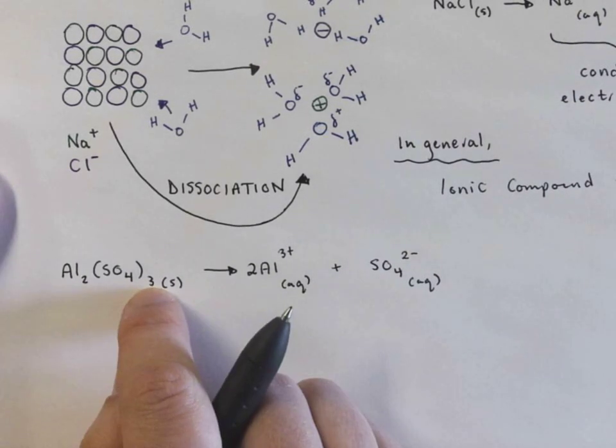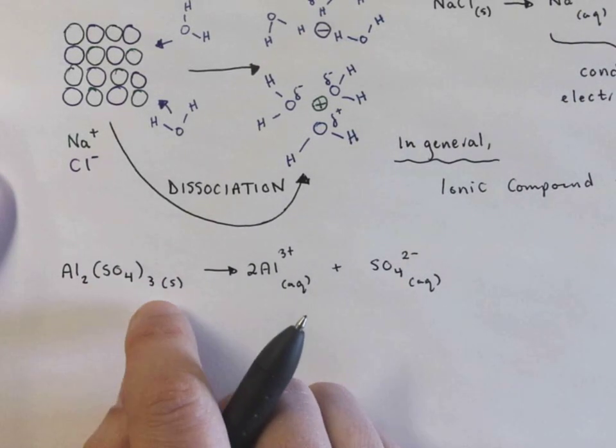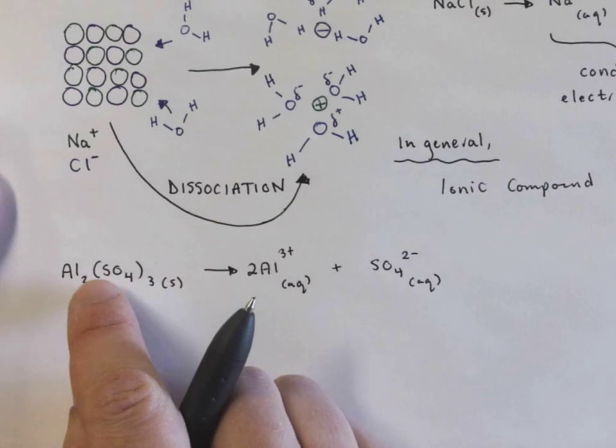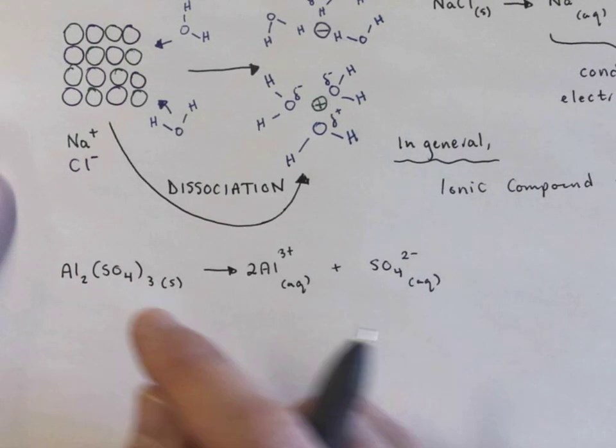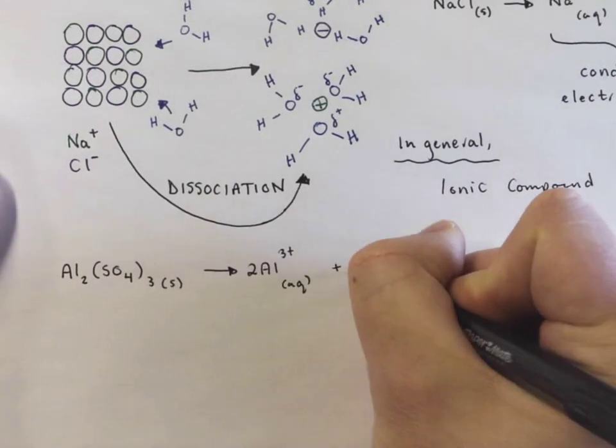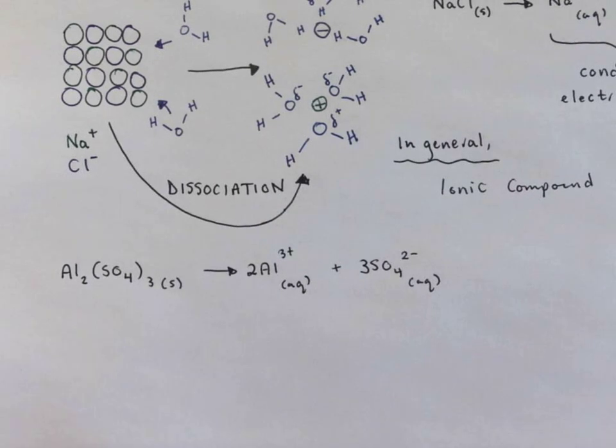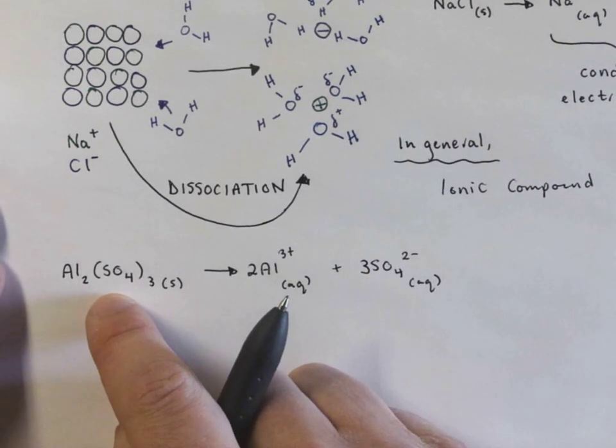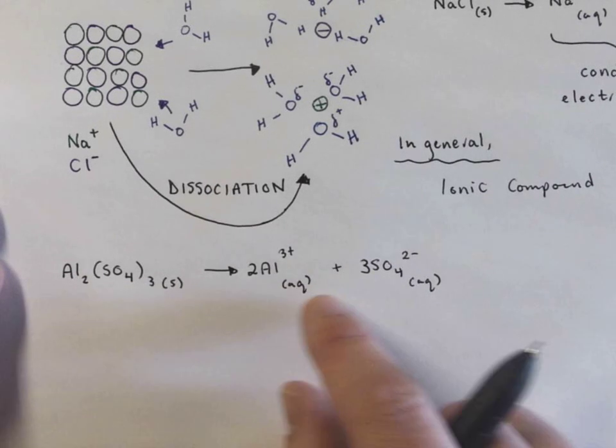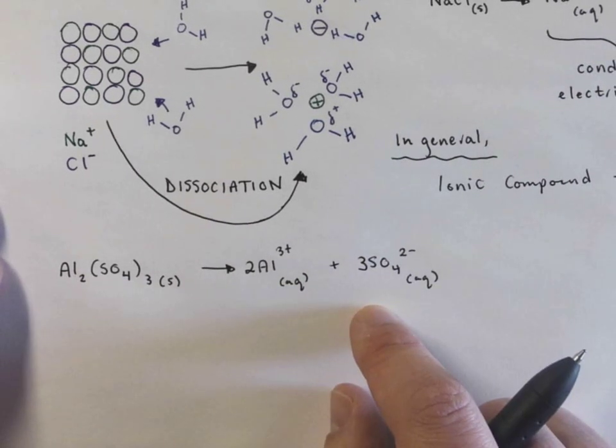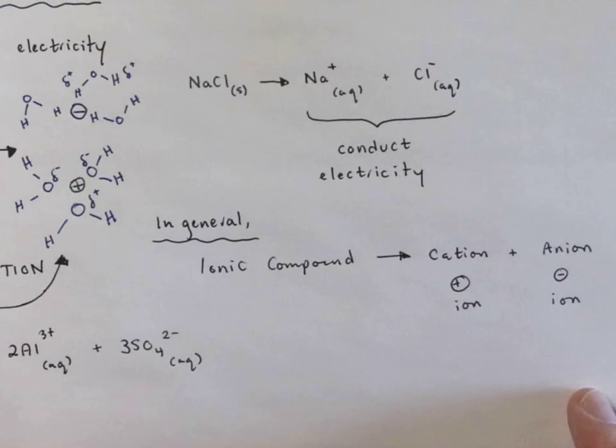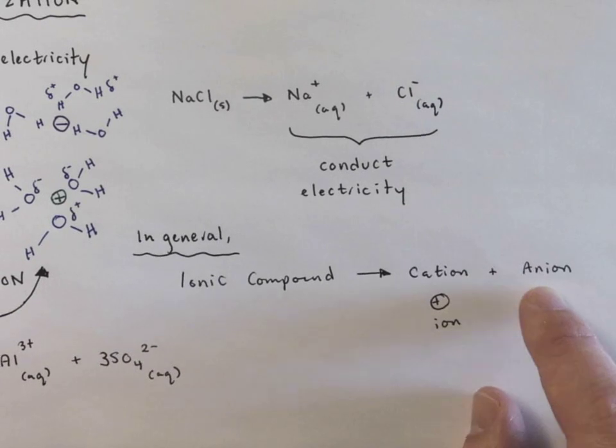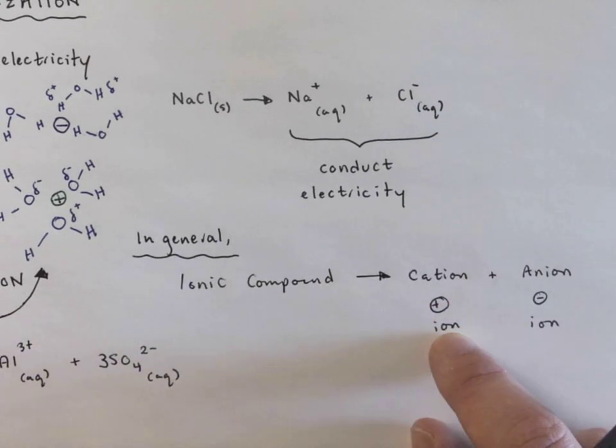Here this says I have three sulfate ions. So you take the three and make sure it applies to everything in brackets that the three follows. So that means I need to have a three right there. So make sure that you're using brackets correctly when you write your chemical formulas and that you balance your dissociation equations. And remember, it's usually going to represent an ionic compound turning into a cation and an anion.